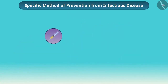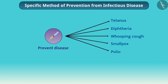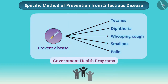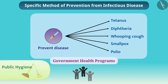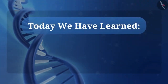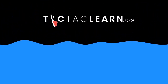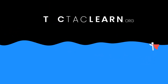There are many vaccines available today that prevent disease, including tetanus, diphtheria, whooping cough, smallpox, polio, and many more. These are part of government health programs to protect children from infectious diseases, and these health programs should be available to all. Therefore, for the prevention of any infectious disease, everyone should practice public hygiene and vaccination. Today we have learned about the principle of prevention of diseases.